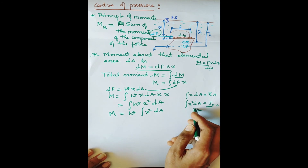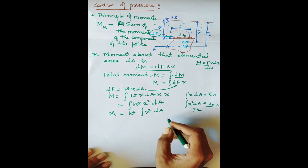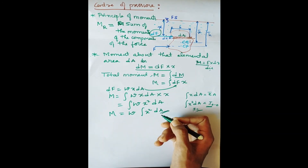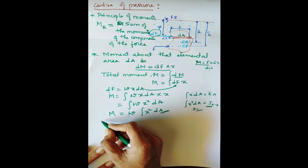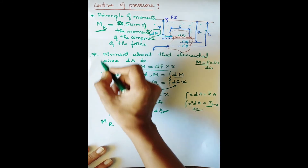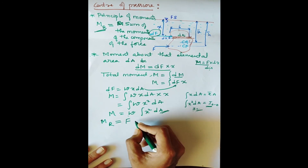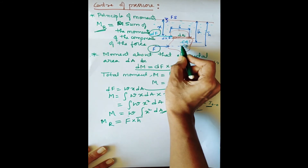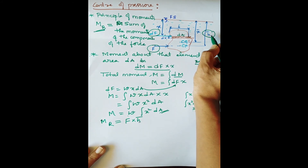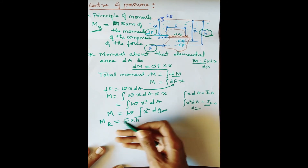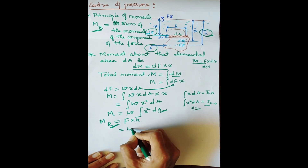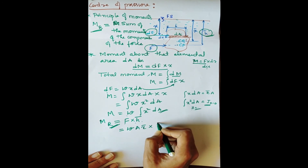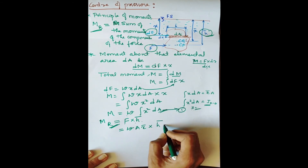The moment of the resultant force MR = F·H̄, since the total pressure force F acts at the center of pressure at depth H̄. Substituting F = w·A·x̄, we get MR = w·A·x̄·H̄ (Equation 1). By the principle of moments, equating Equation 1 and Equation 2: w·A·x̄·H̄ = w·∫x²·dA = w·I₀₀. Cancelling w: A·x̄·H̄ = I₀₀, so H̄ = I₀₀ / (A·x̄).